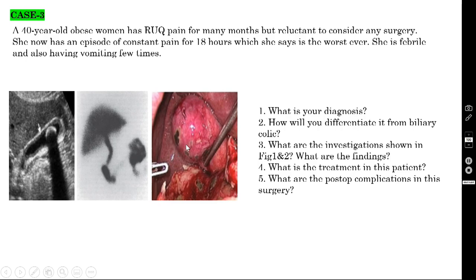In this picture, the gallbladder is distended with patchy gangrenous areas — this is empyema of the gallbladder with impending perforation. In these cases, doing a cholecystectomy would be dangerous. If you suspect empyema or gangrenous gallbladder, you should perform cholecystostomy — put a catheter inside and drain the infected bile. Don't go for major surgery like cholecystectomy.